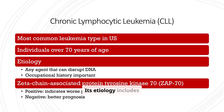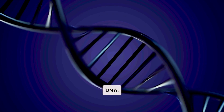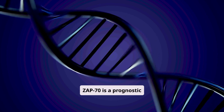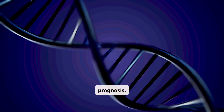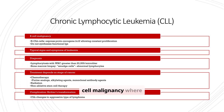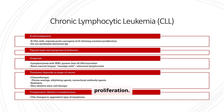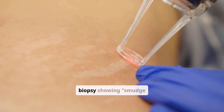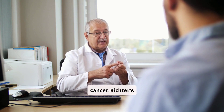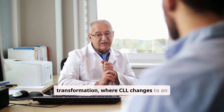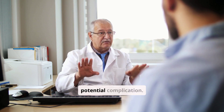The etiology of CLL includes agents that can disrupt DNA. ZAP70 is a prognostic marker, with a positive result indicating worse prognosis. CLL is a B cell malignancy where cells express the proto-oncogene BCL2, leading to constant proliferation. Diagnosis involves lymphocytosis and bone marrow biopsy showing smudge cells. Treatment depends on the stage of cancer, and Richter's transformation — where CLL changes to an aggressive lymphoma — is a potential complication.